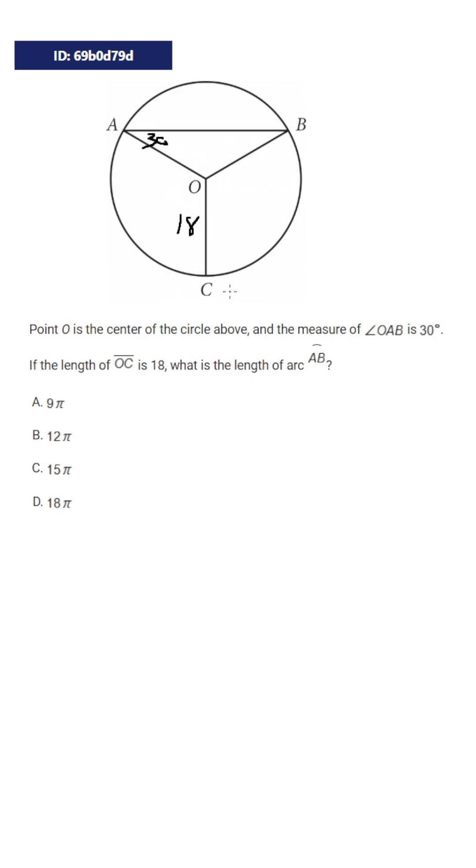What we should then do is try to fill in anything else we can. Length of AO is also going to be 18 and so will the length of OB, and the reason why is because all of these are radiuses which means they're all equal.